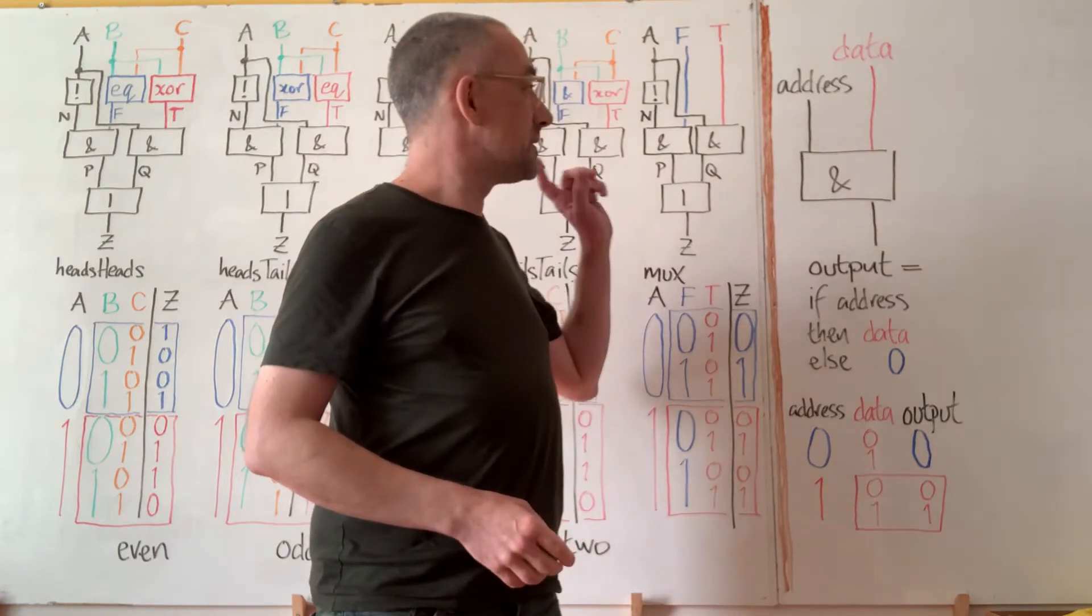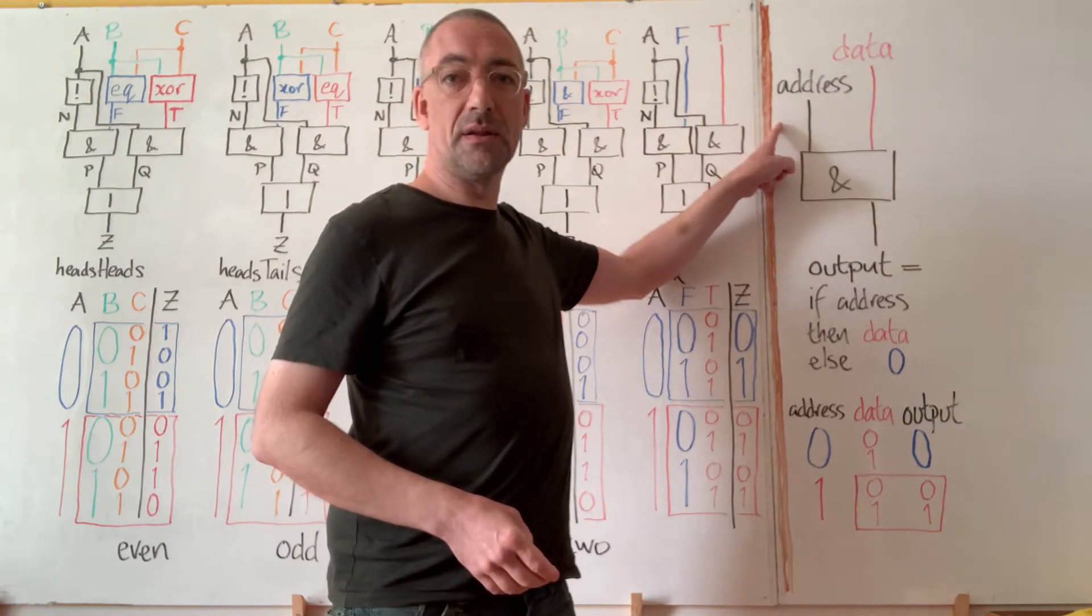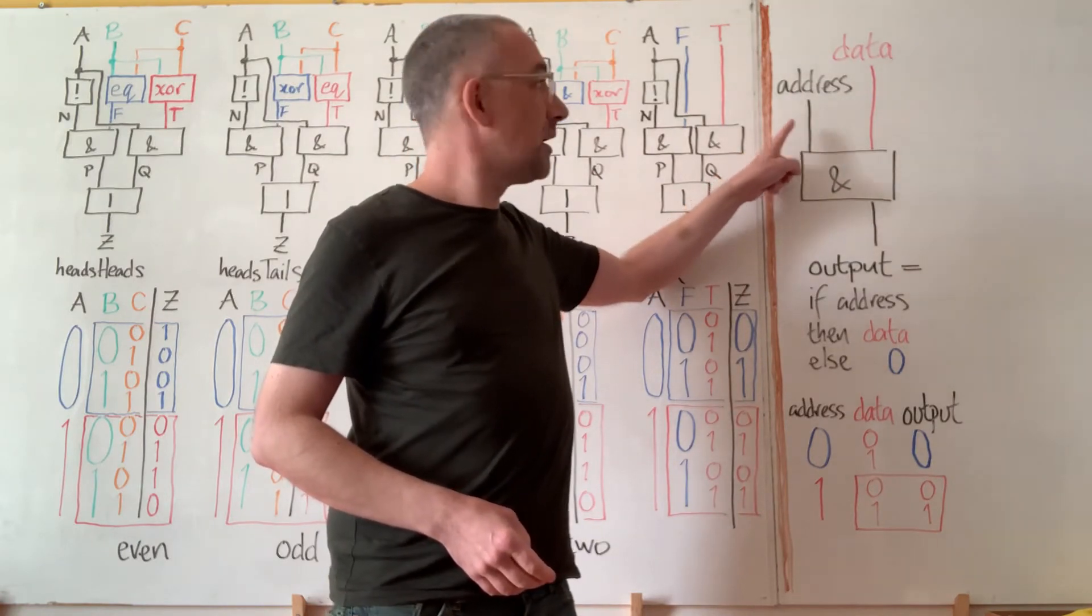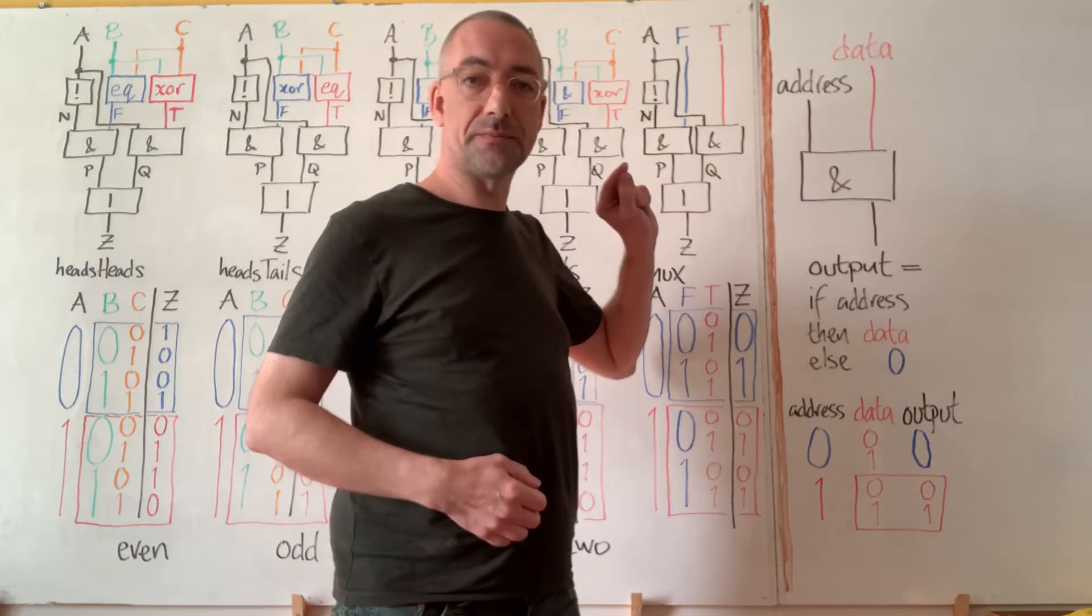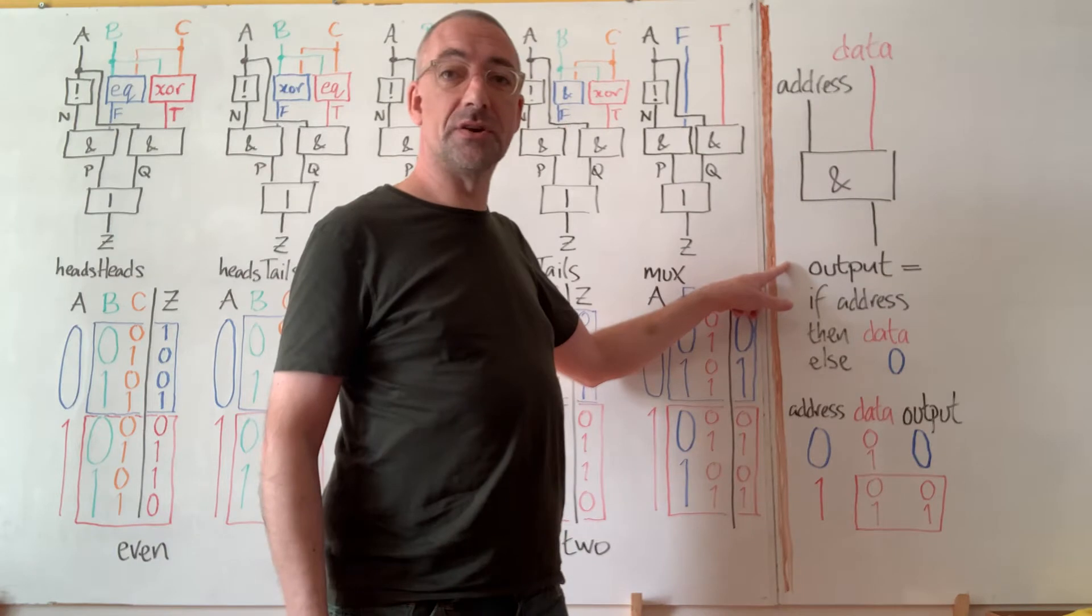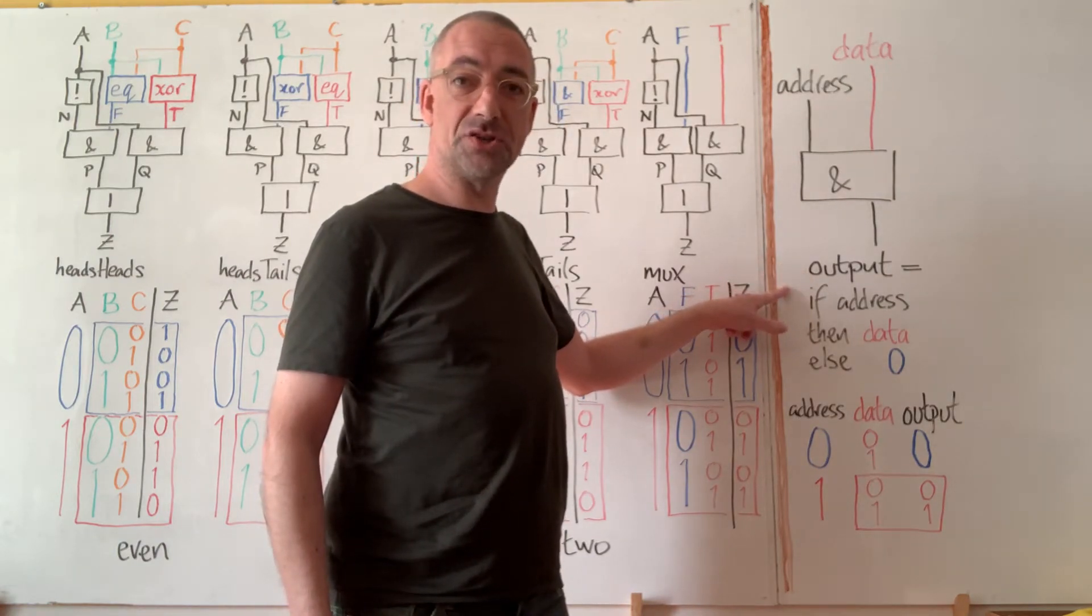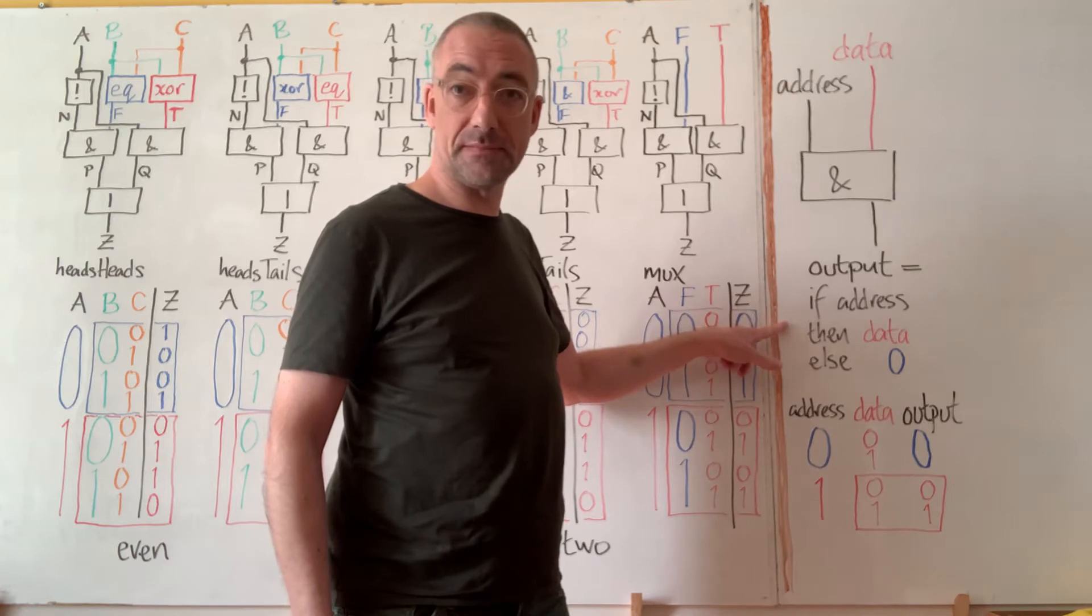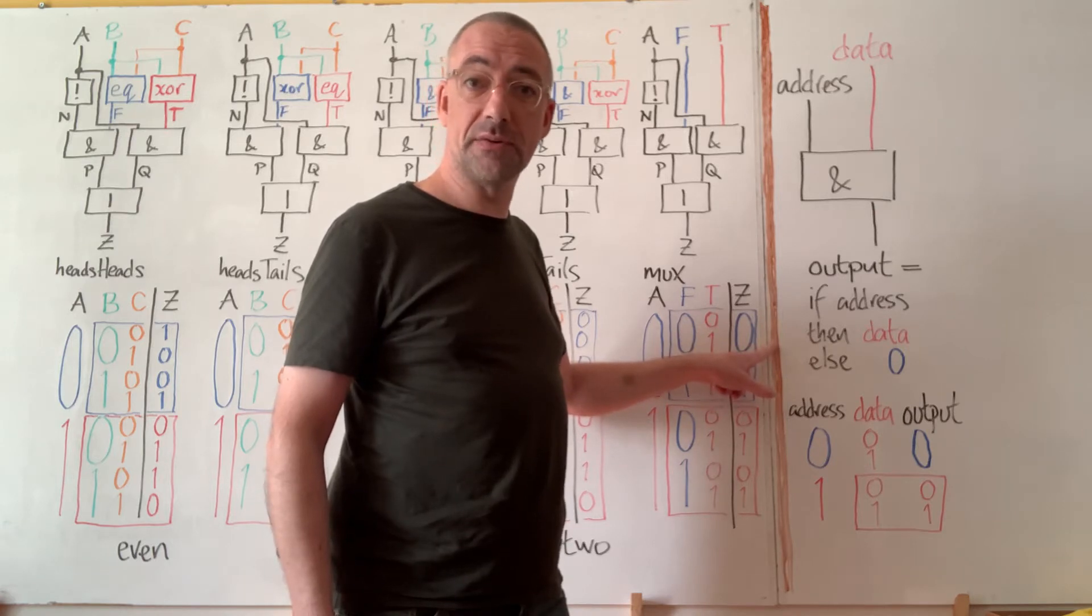So the idea is that we think of one input as an address signal that says whether we want the data signal. That's the input to the other component. So the output is going to be given by this logic. If the address is true then we want the data. If the address is false then we don't want the data and we're going to get the zero.